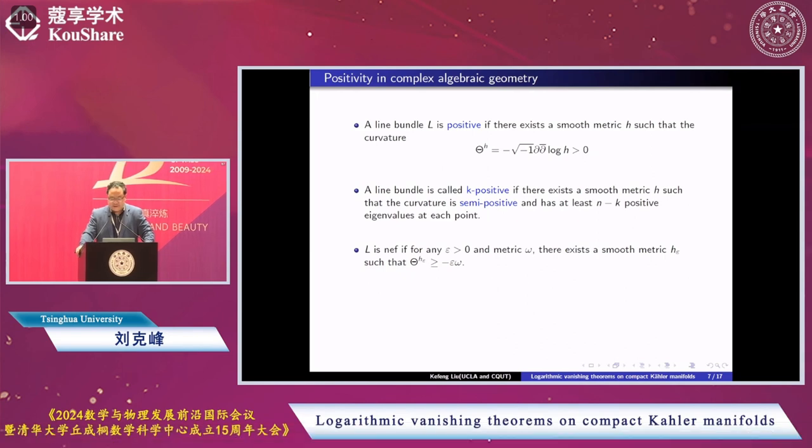Like this, the smooth metric H epsilon depends on epsilon such that the corresponding curvature is greater or equal to negative epsilon omega, where omega is a Kähler metric, a Kähler form.